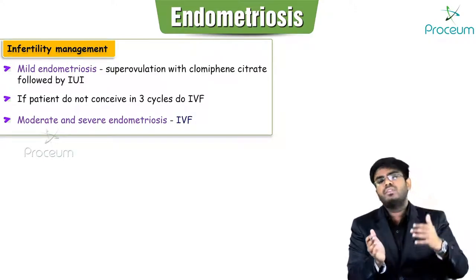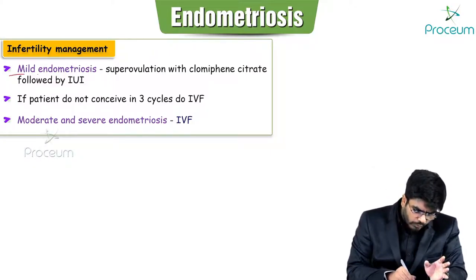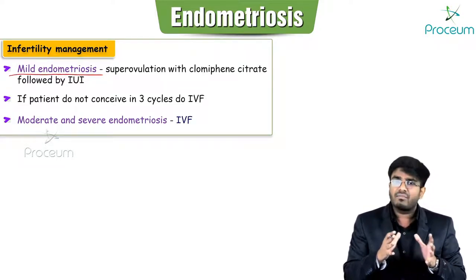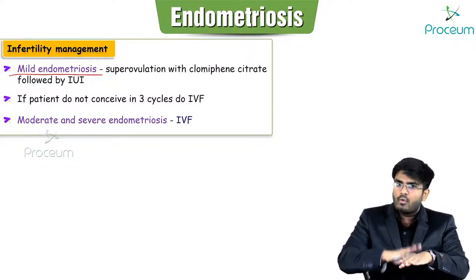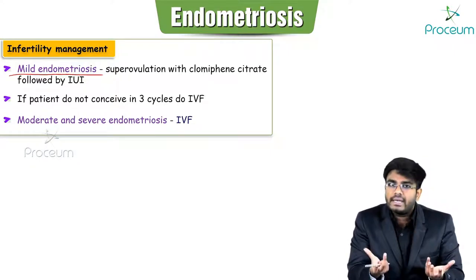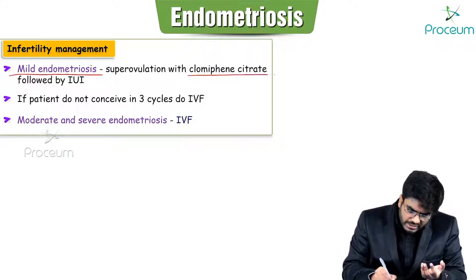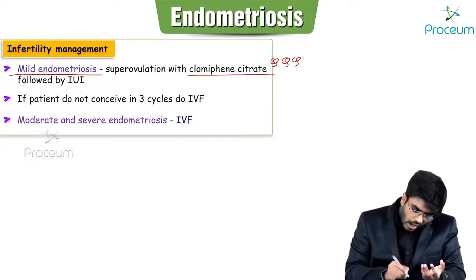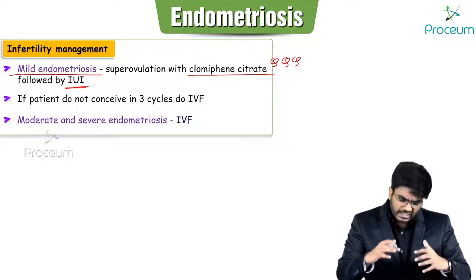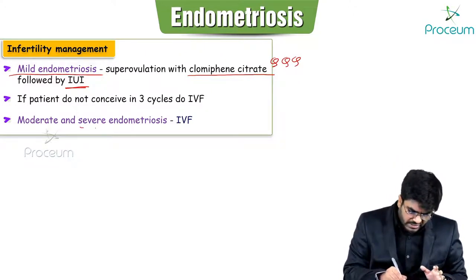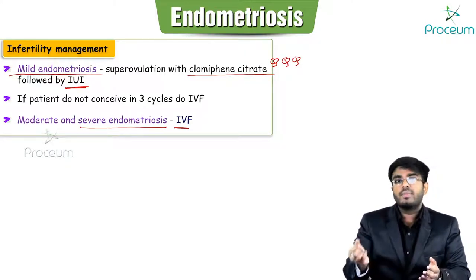For infertility management: in mild endometriosis, ovulation-inducing drugs such as clomiphene citrate are given, followed by intrauterine insemination. In severe endometriosis, if simpler treatments fail, in vitro fertilization (IVF) is performed — eggs are collected from the ovaries and sperm from the partner.